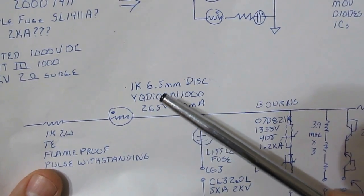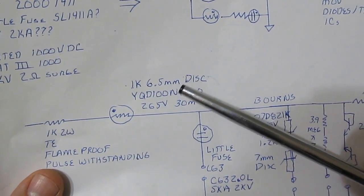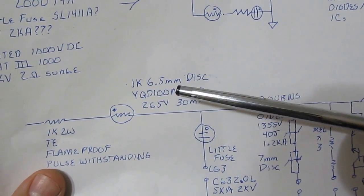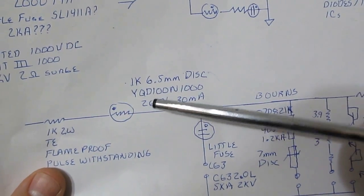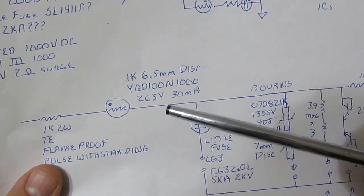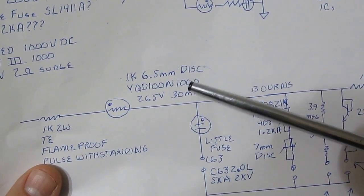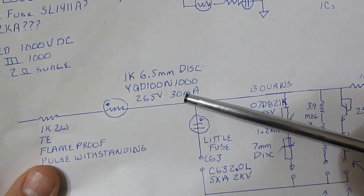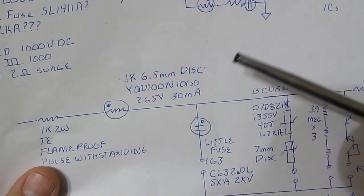For the PTC, I'm going to be using a 1k device as well. This is a 6.5 millimeter disc. It's a part number YKD-100N-1000. This device is rated for 265 volts and it's rated to carry a maximum of 30 milliamps.